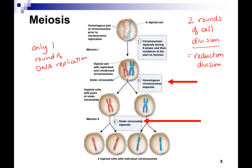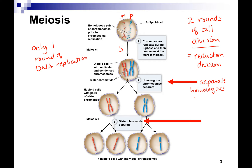Here's our homologous pair — one from mom, one from dad, a maternal and a paternal. You undergo S phase and you have your homologous pairs that are replicated. What's going to happen in the first separation is you separate homologous pairs. This is different — this never happens in mitosis. In the second round of cell division, you separate the sisters, which is just like mitosis.